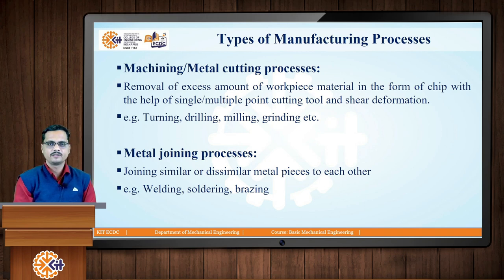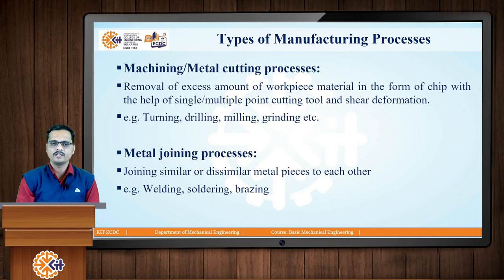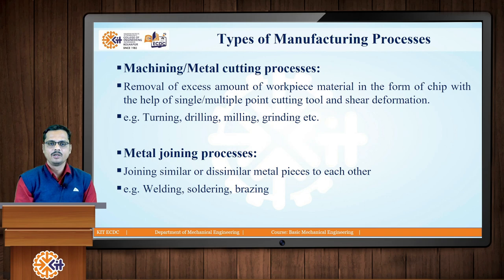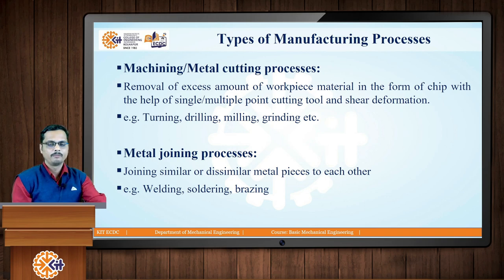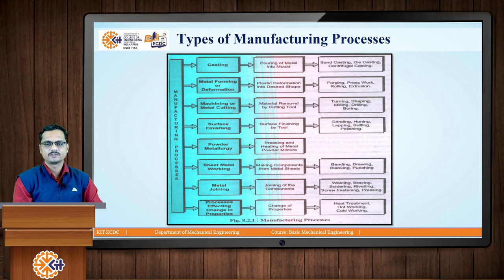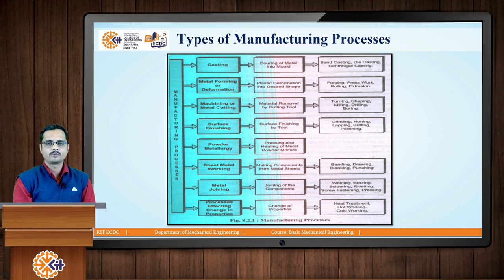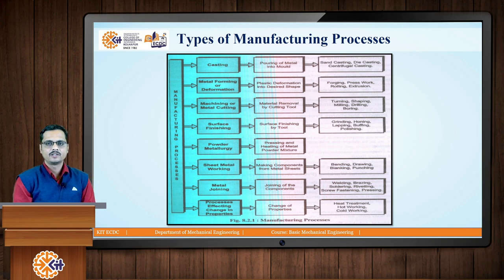The fourth basic manufacturing process is metal joining. By using metal joining processes, we can join similar or dissimilar metal pieces to each other. Examples are welding, soldering, and brazing. So these are the four basic manufacturing processes. This particular slide shows a summary of all the manufacturing processes we have discussed, along with their principles and the main philosophy behind them.